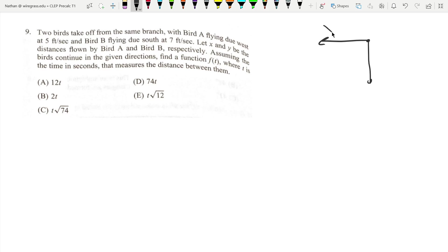X is the distance flown by bird A, and Y is the distance flown by bird B. We have a function f of t where t is time in seconds.